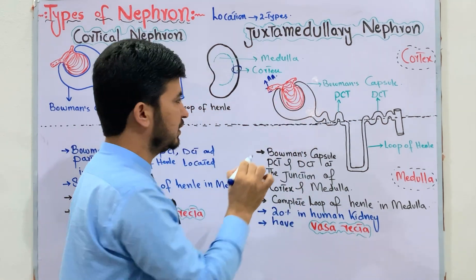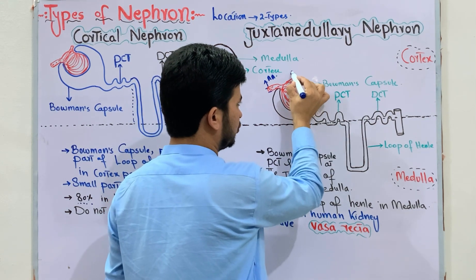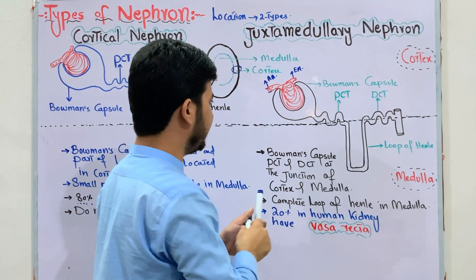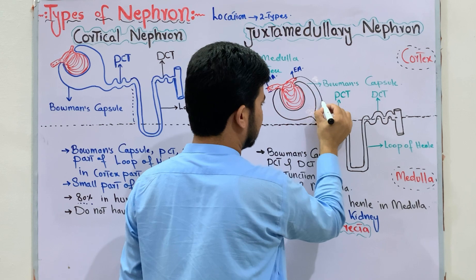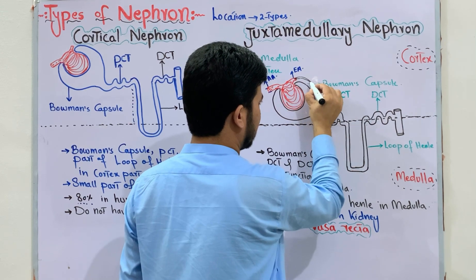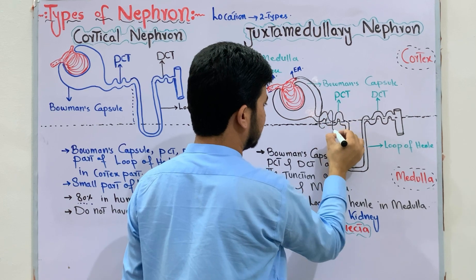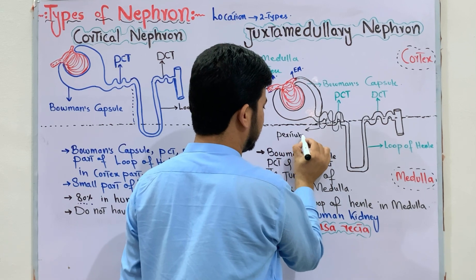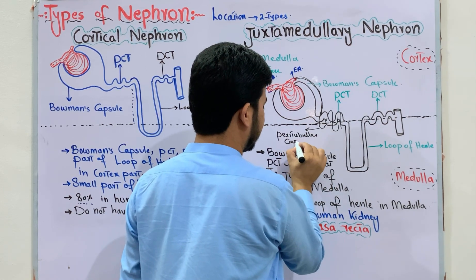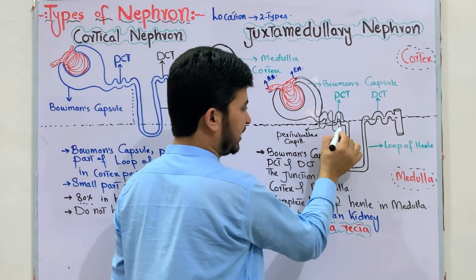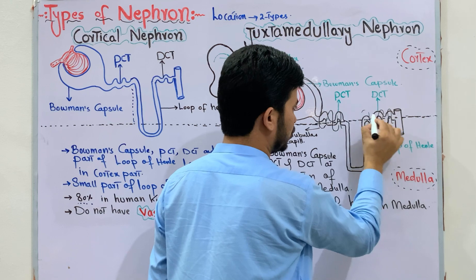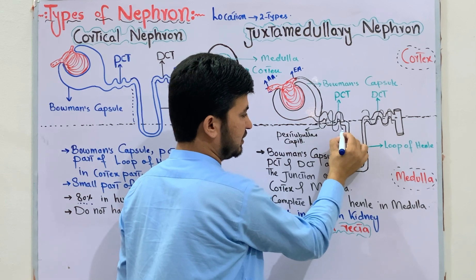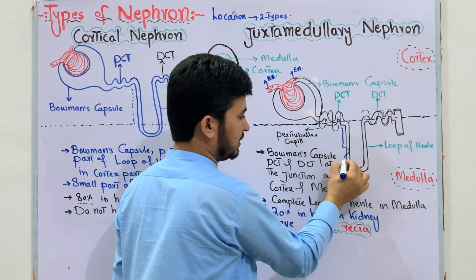The efferent arteriole divides into capillaries. The first type of capillaries formed from the efferent arteriole around the PCT part are the peritubular capillaries. The peritubular capillaries surround the DCT part as well, forming a network around the tubules.